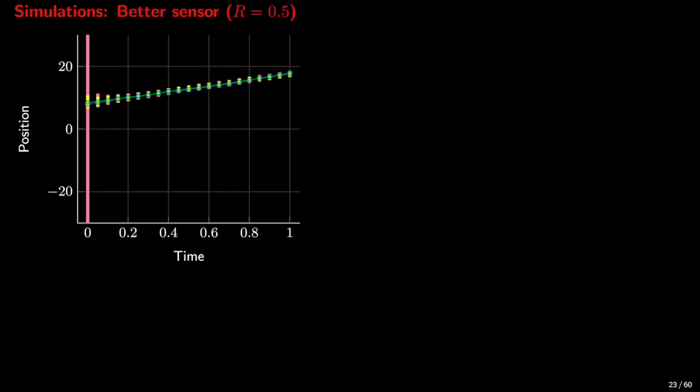This is what the estimates look like if we have a better sensor, that is, we have a lower measurement variance. The value of the measurement variance before was 15, and now it is 0.5.